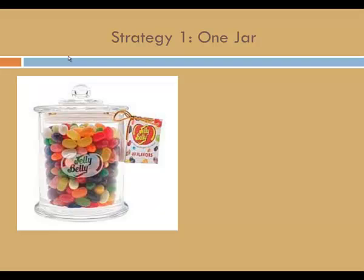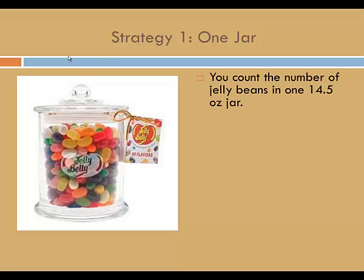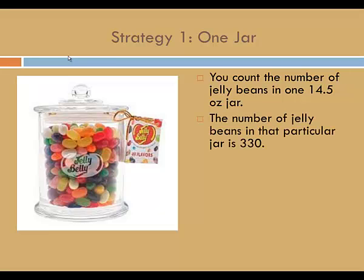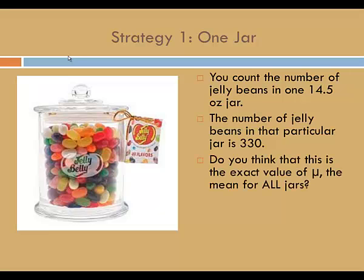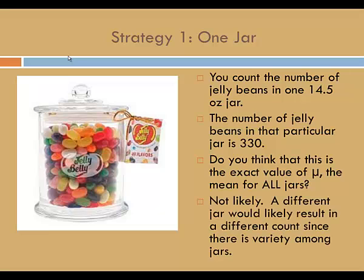Strategy 1: One jar. You count the number of jelly beans in one 14.5 ounce jar. The number of jelly beans in that particular jar happens to be 330. Do you think that this is the exact value of mu, the mean for all jars? Not likely. A different jar would likely result in a different count, since there is variety among the jars.